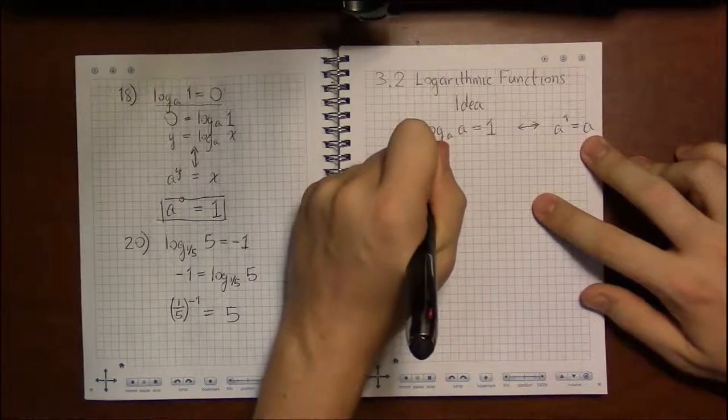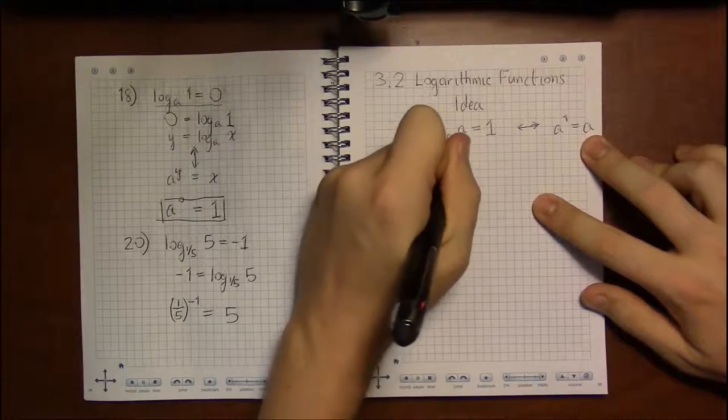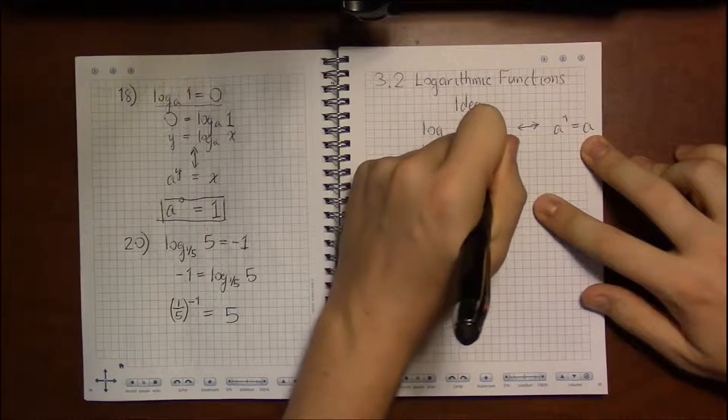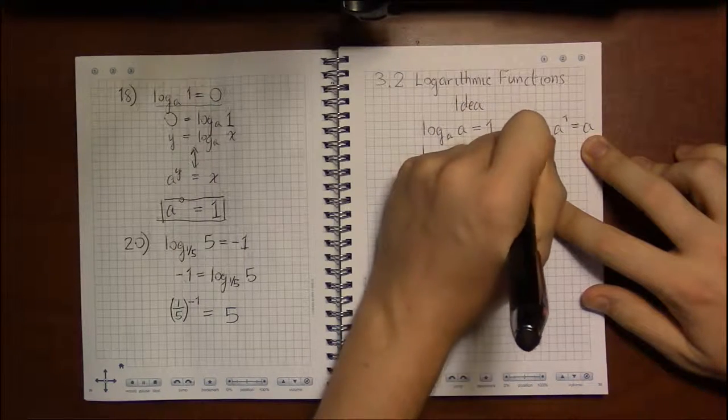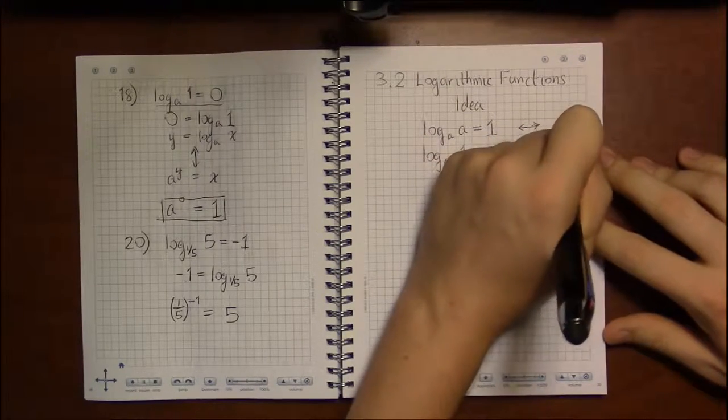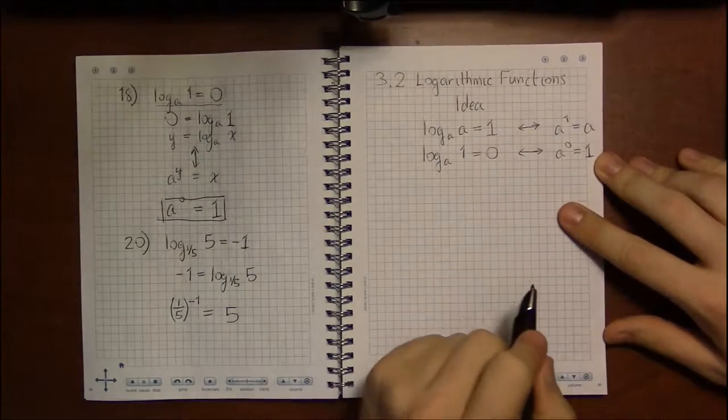The next property they have is that, and we already saw this in the last video, that log base a of 1 is 0. And this is the same thing as saying that anything to the 0 power is just 1.